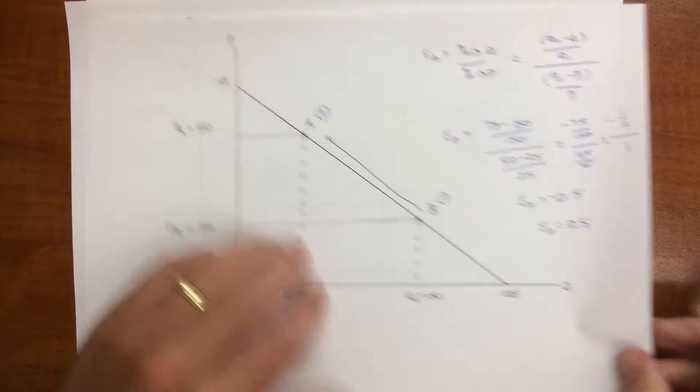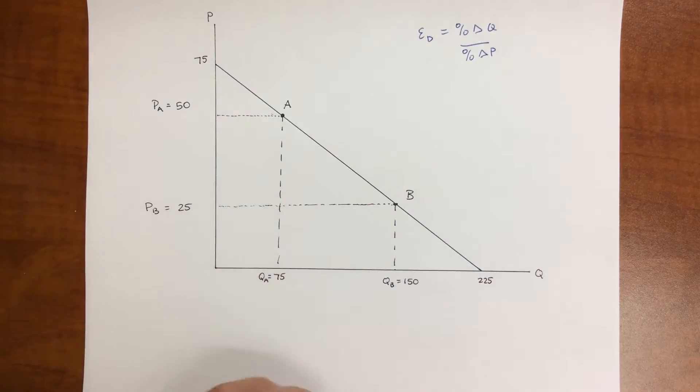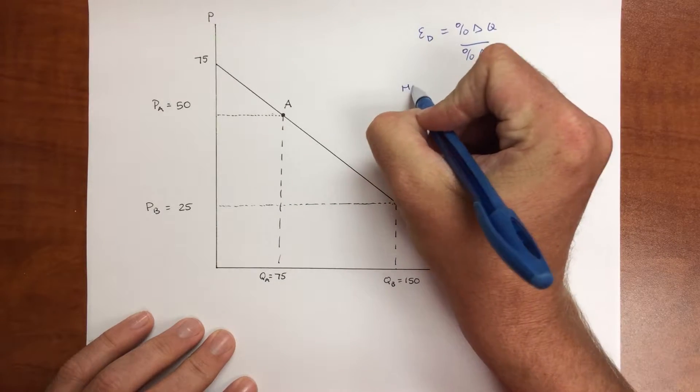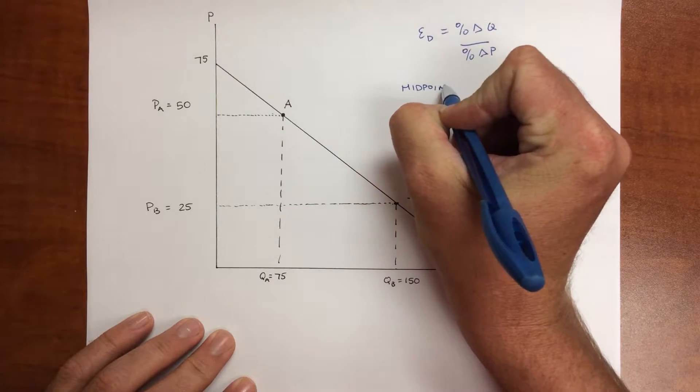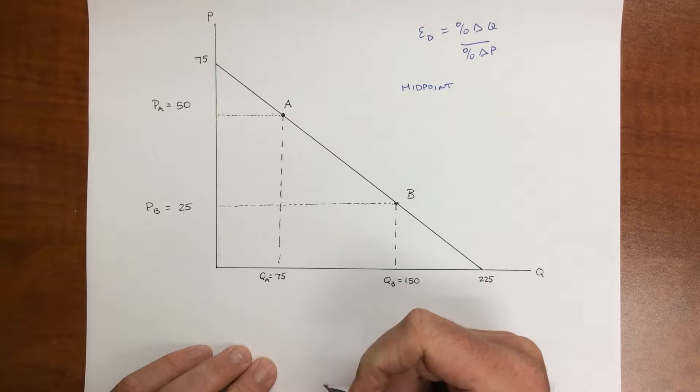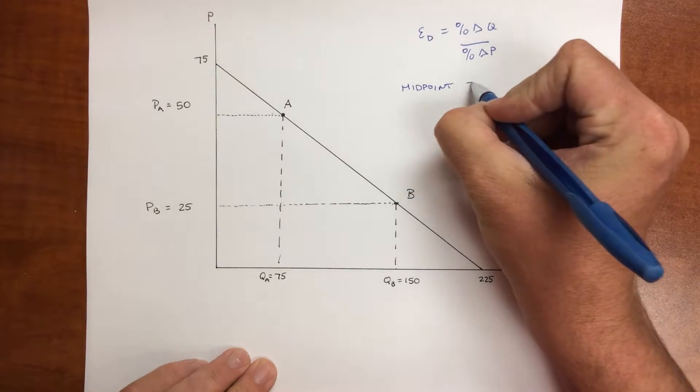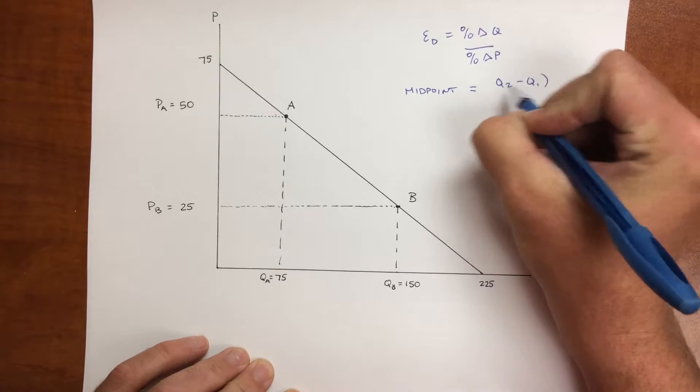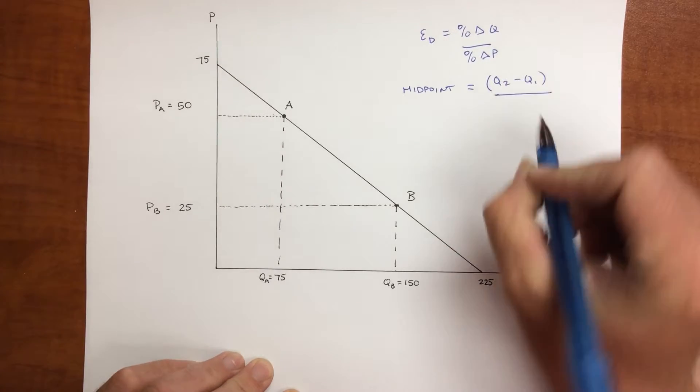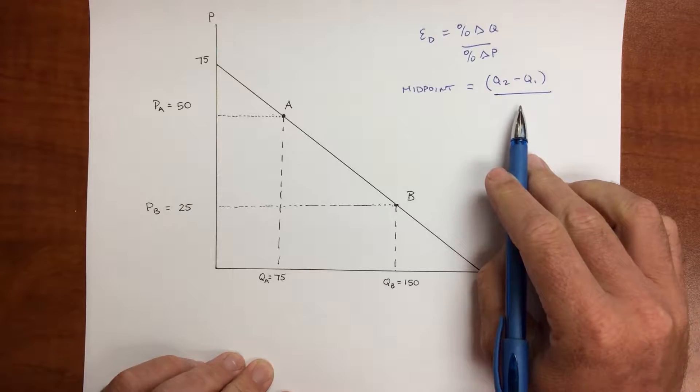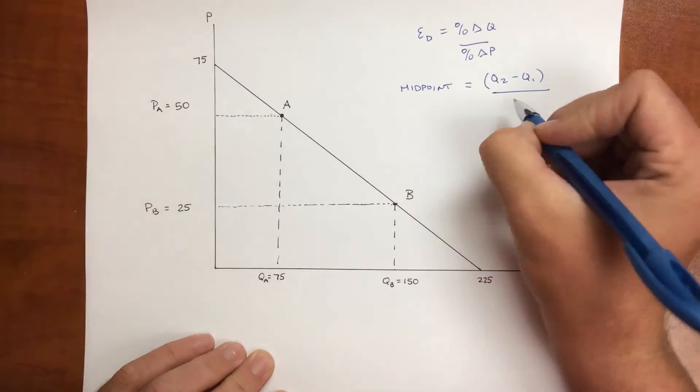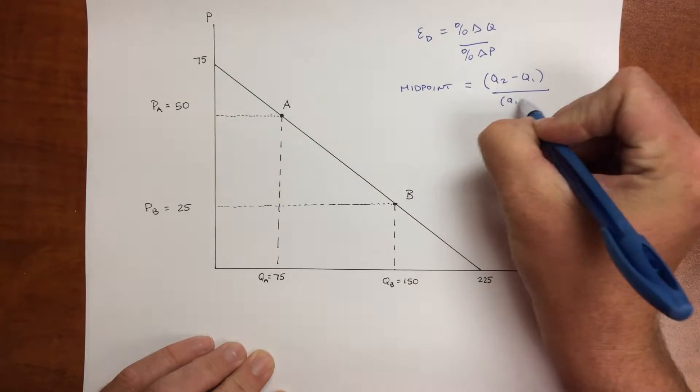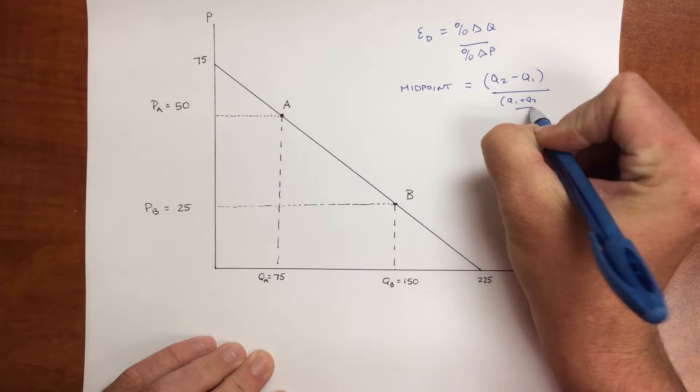And so to account for this, the method that can be used is the midpoint method to estimate elasticity of demand. This tells us that the percentage change in quantity is still Q2 minus Q1, but instead of using the starting point of quantity, we're going to use the midpoint, which is Q1 plus Q2 divided by 2.